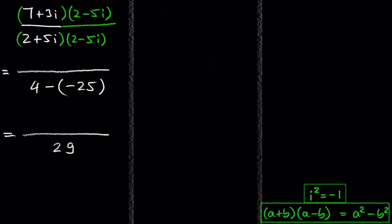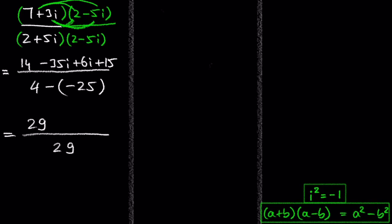Feel free to pause the video and try this yourself. 7 times 2 is 14. 7 times negative 5i is negative 35i. 3i times 2 is 6i. And 3i times negative 5i is 15. The real parts are 14 and 15, which is 29. And the imaginary parts are negative 35 and 6, which is negative 29i in total.